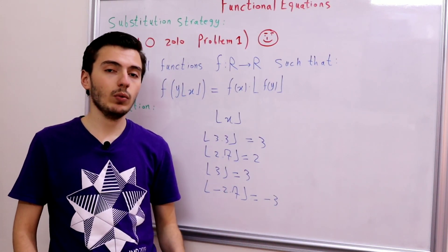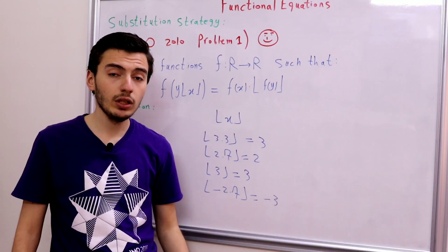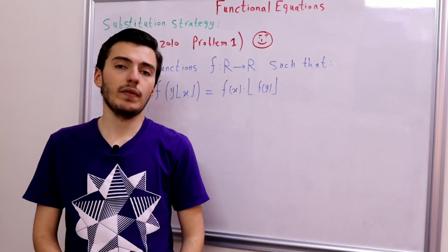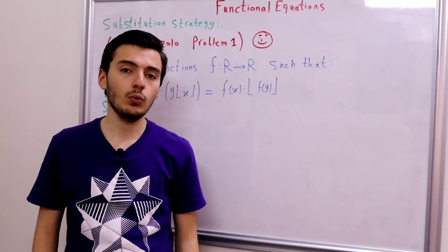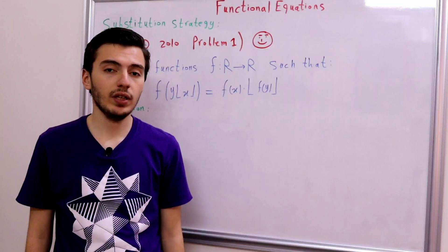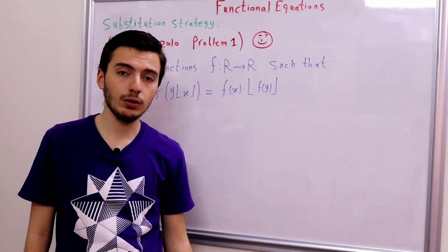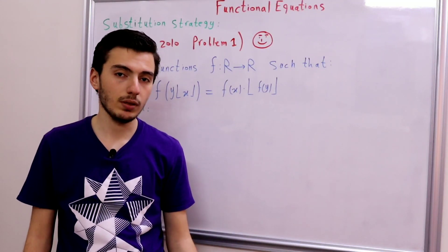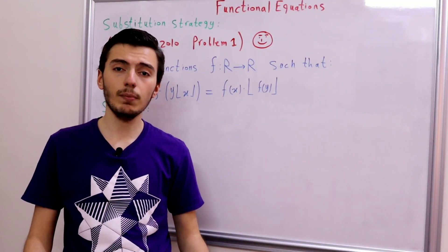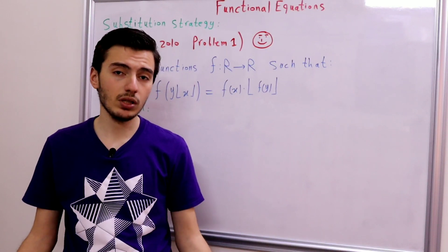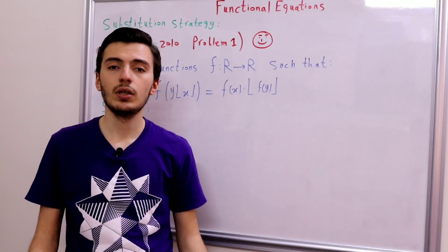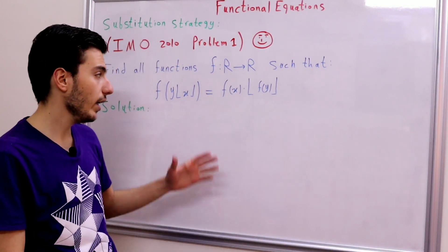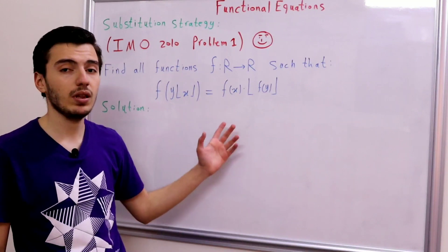Now that we understand the floor function, let's start with our functional equation. The first thing we do when solving a functional equation is substitute small numbers. The simplest number to start with is 0, so let's substitute x = 0.